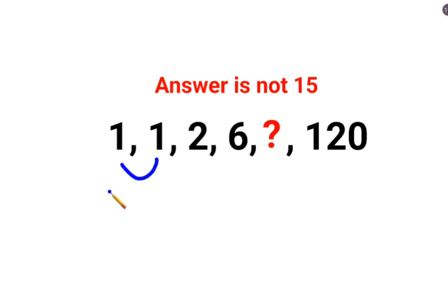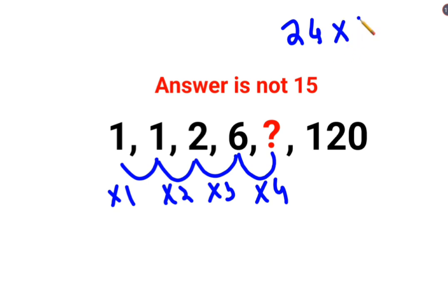So 1 multiplied by 1, 1 multiplied by 2, 2 multiplied by 3. And 6 then should be multiplied by 4. So technically answer should have been 24 and 24 when multiplied by 5 gets you 120.